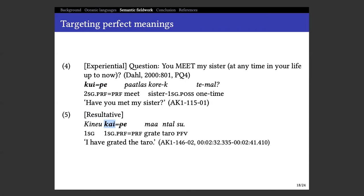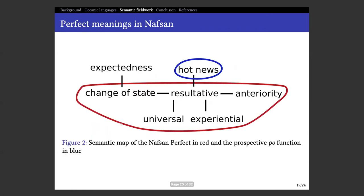To sum up — I didn't show everything, but all the meanings I found in Nafsan are shown in what we call a semantic map, where we relate different meanings to each other, finding a core meaning of the category and seeing which other meanings it can express and how they relate. What I found is that the resultative meaning seems to be the basic meaning — 'I have grated the taro' — and then other meanings can also be associated with perfect in different ways.